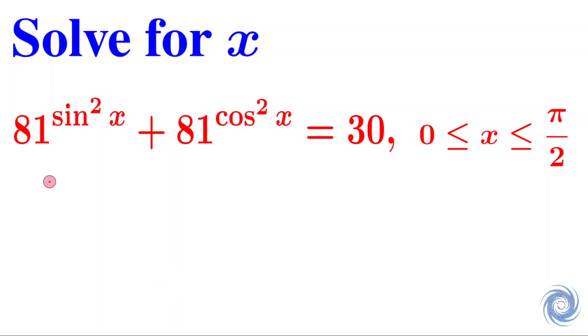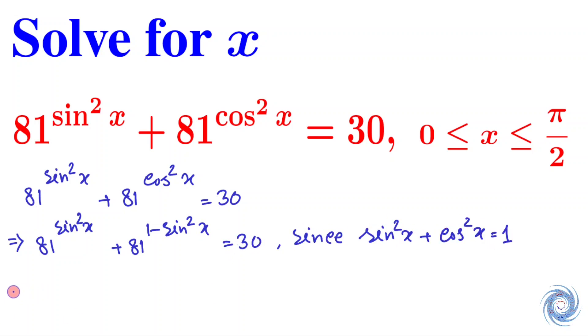So we have to solve this equation for x. Let us write down the given equation. Now we will use the fact that sin²x + cos²x = 1, so from here we have cos²x = 1 - sin²x.